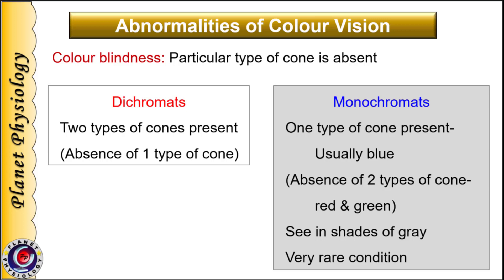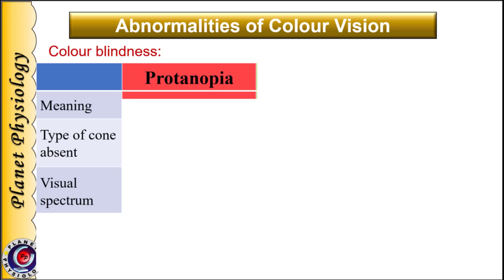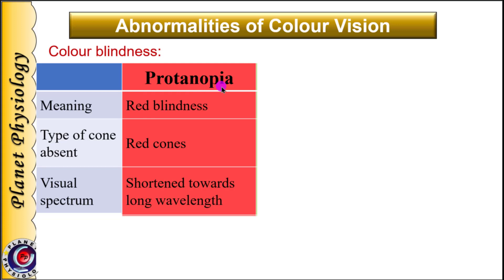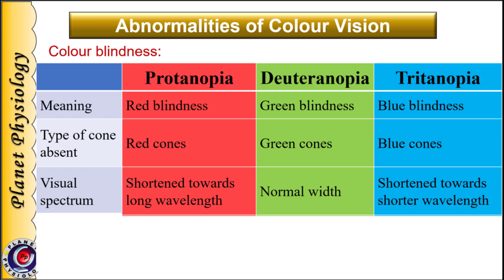Now let us study details about dichromates. Based on the type of deficient cone, dichromates are further subdivided into three types. First is protanopia — 'prot' is for red, 'anopia' means blindness — so there is red color blindness and red cones are absent. The patient's visual spectrum is shortened towards long wavelengths; since red cones are absent, the visual spectrum ranges only from blue to green. In deuteranopia, green cones are absent and the person suffers from green color blindness; the width of the visual spectrum remains the same because the green spectrum is in the middle. The third type is tritanopia, that is blue color blindness, where blue cones are absent and the visual spectrum is shortened towards the smaller wavelengths.